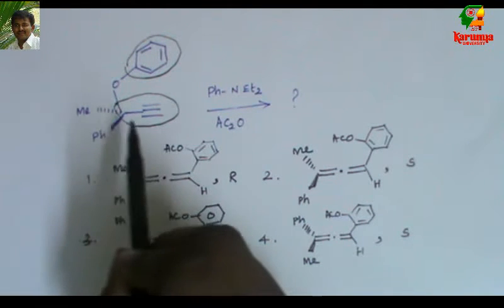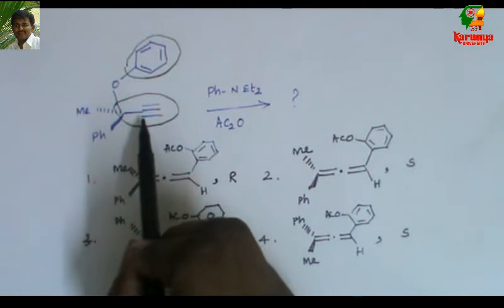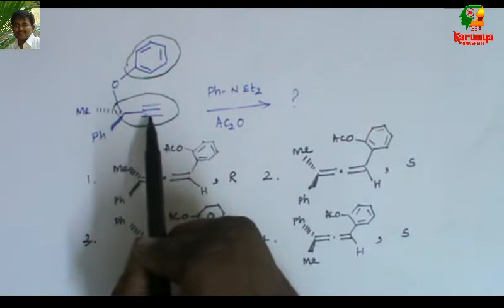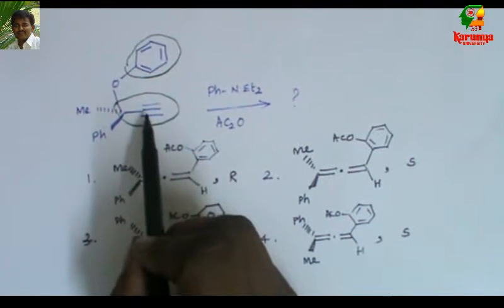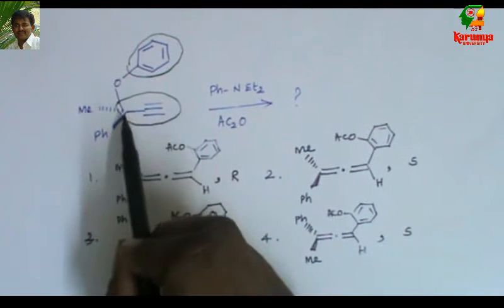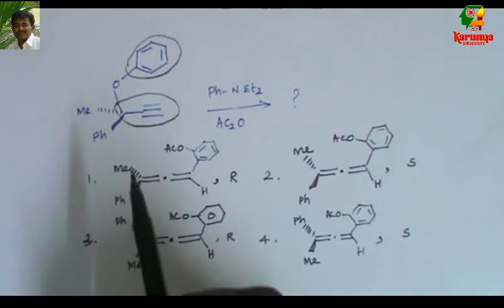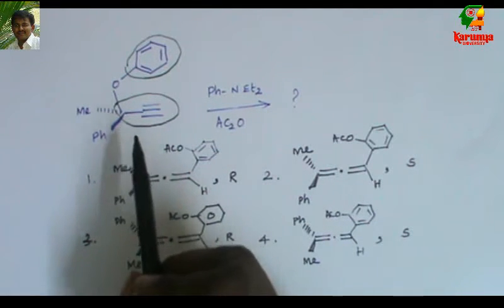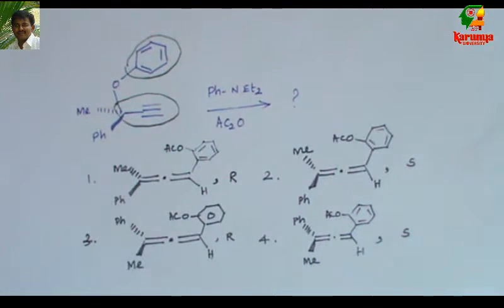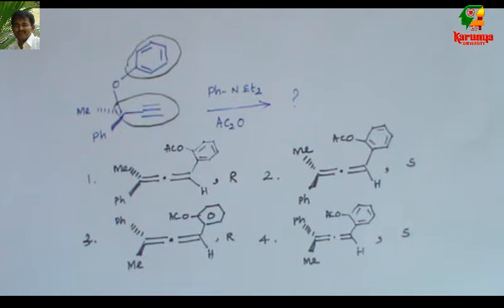But instead of allyl, now we have propargyl — that is nothing but a triple bond then one carbon. This compound can also undergo 3,3-sigmatropic rearrangement to give the corresponding rearrangement product.